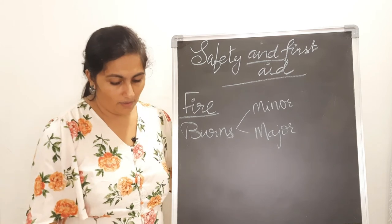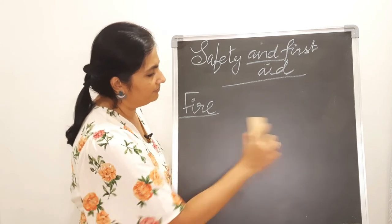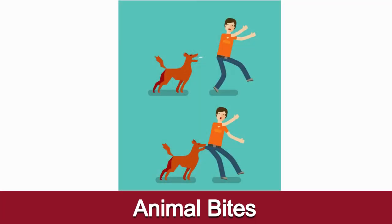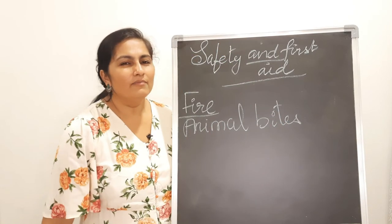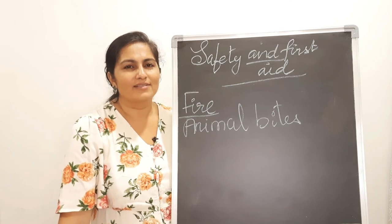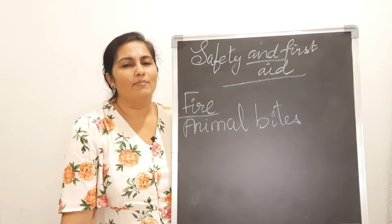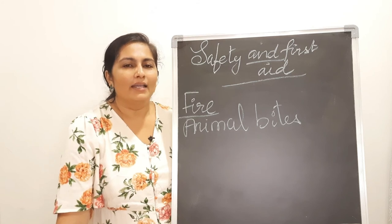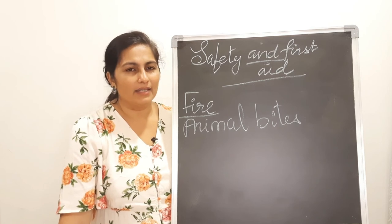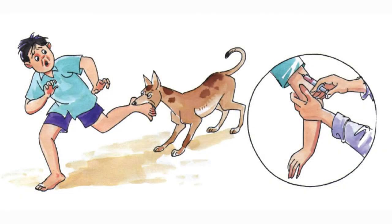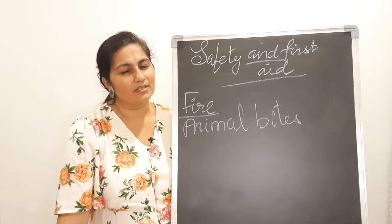For animal bites — such as from street dogs — immediately wash the area thoroughly with soap and water, apply an antiseptic solution, and put a band-aid. Then take the person to the doctor, as they may need an anti-rabies injection. A dog bite always requires a rabies vaccine.